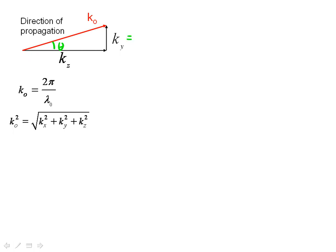Since this is a simple triangle, we know that ky equals k-naught sine theta, and kz in this case is equal to k-naught cosine theta. This is simple trigonometry, should be pretty straightforward.